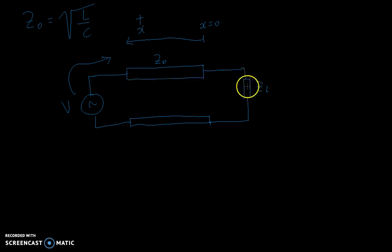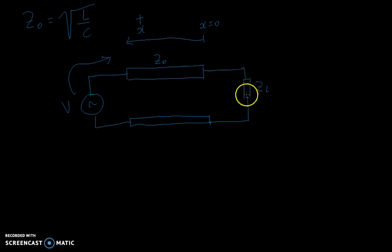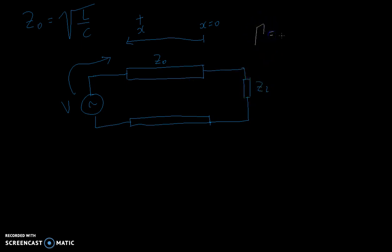However, if you put a resistor of some value, depending on the value of the resistor, you will have either no reflection at all, or if you have an infinite resistor you have a plus one reflection coefficient. And if you have no resistor or a short, you have minus one. This is called the reflection coefficient and is given the symbol gamma.